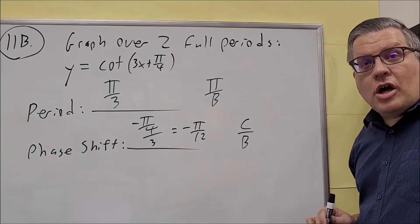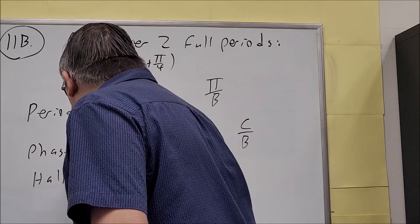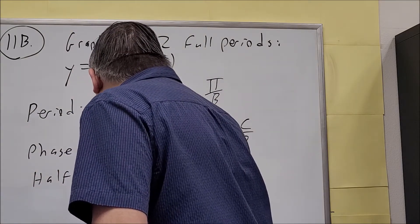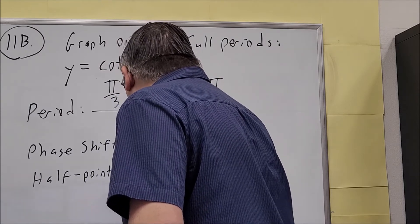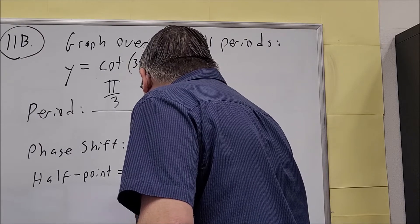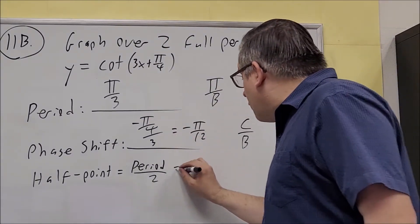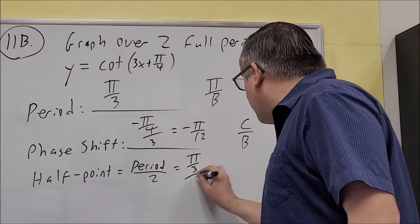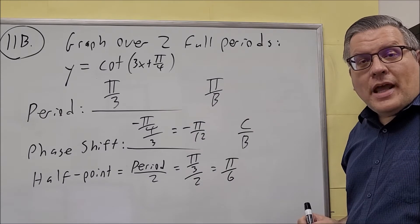Next, we have to figure out what the half point is. So half point is going to be, the formula for it is period divided by 2. The period we found was π over 3. So we have π over 3, we're dividing it by 2, and so we get π over 6 as your half point.